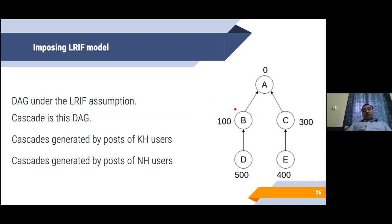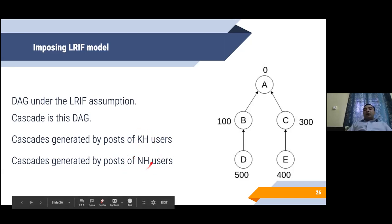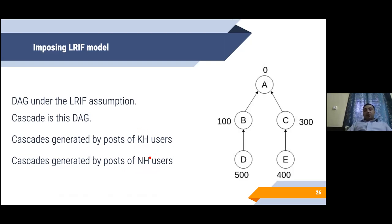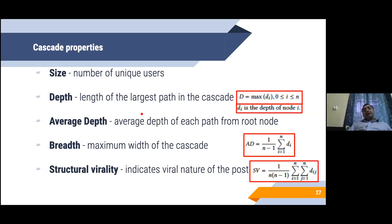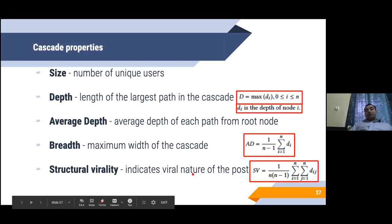Once we have the exact influence path, we construct the influence path for all the hateful users that have been marked hateful by the DeGroot model, and also by all the non-hateful users. We study some very standard cascade properties, like size which indicates the number of unique users, depth that is the length of the largest path in the cascade, average depth that is the average depth from the root node, the breadth that is how broad the cascade is at any level, and then the structural virality which is an average of the pairwise distances.